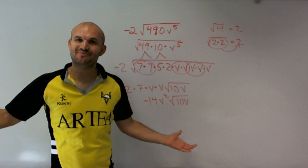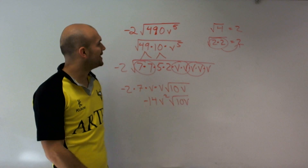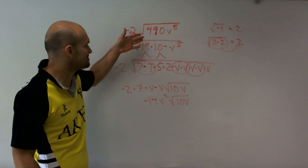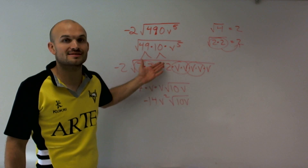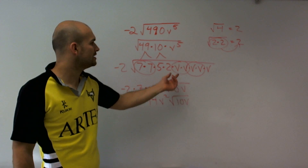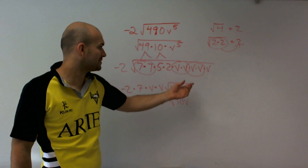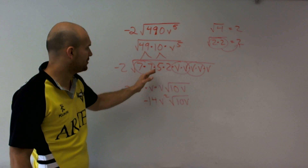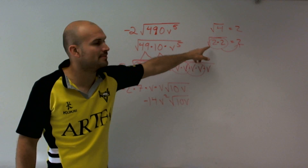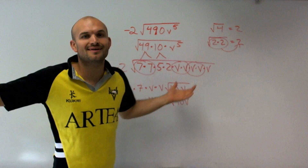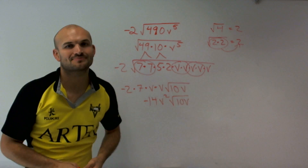b times b is b squared, times the square root of 10b. And there we go — we got it simplified. It wasn't that bad! Just make sure we factor, and since it's the square root, you're going to pull out pairs of numbers. Remember, the square root of 2 times 2 is 2. Hope you enjoyed.